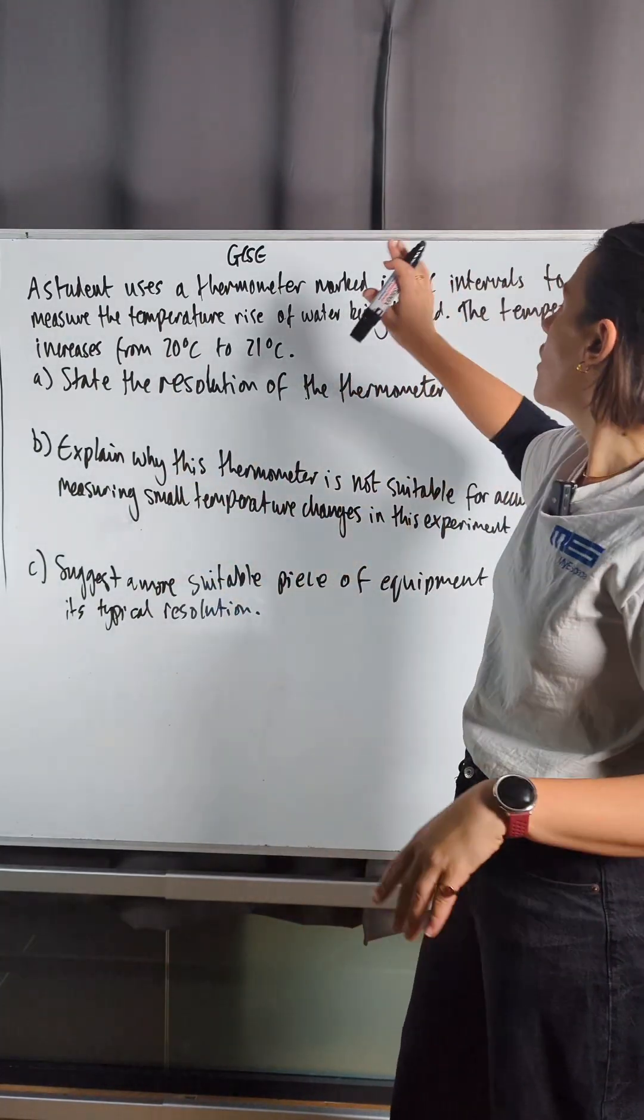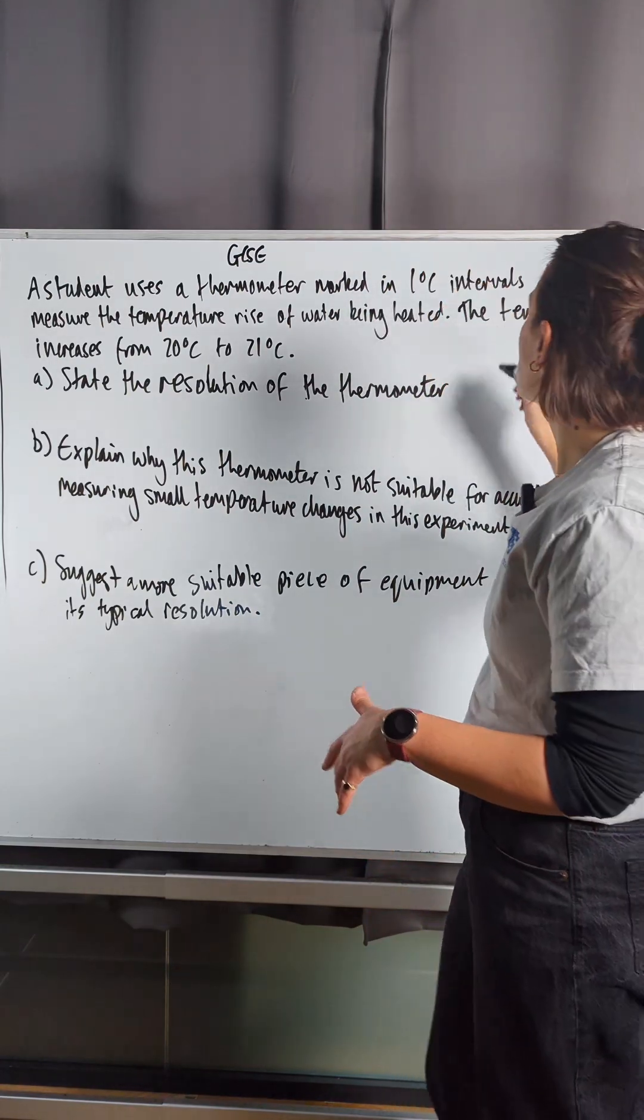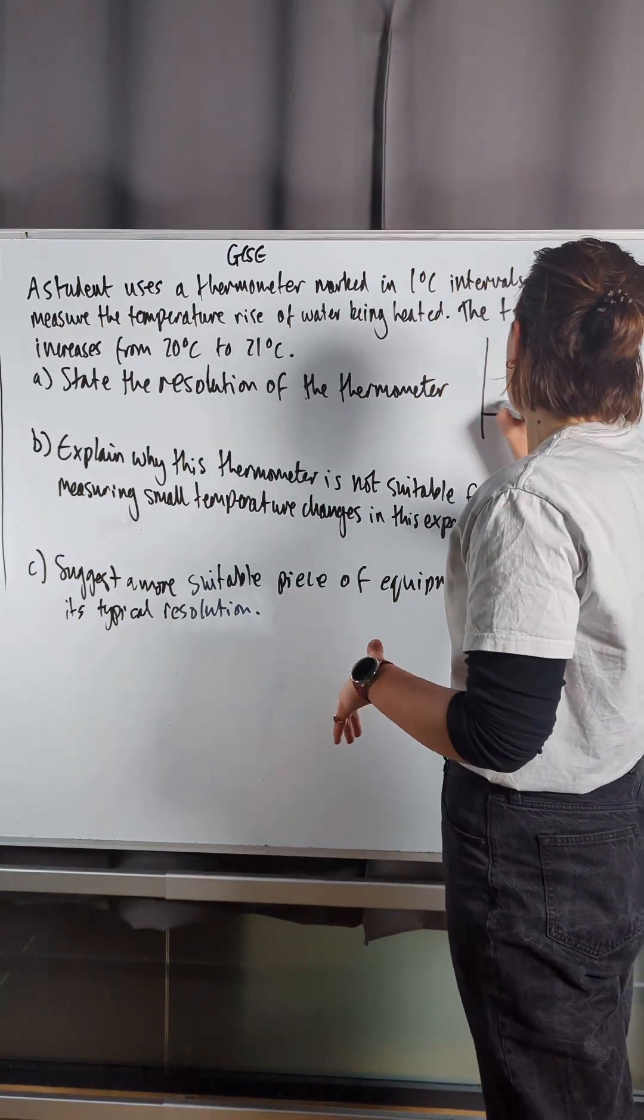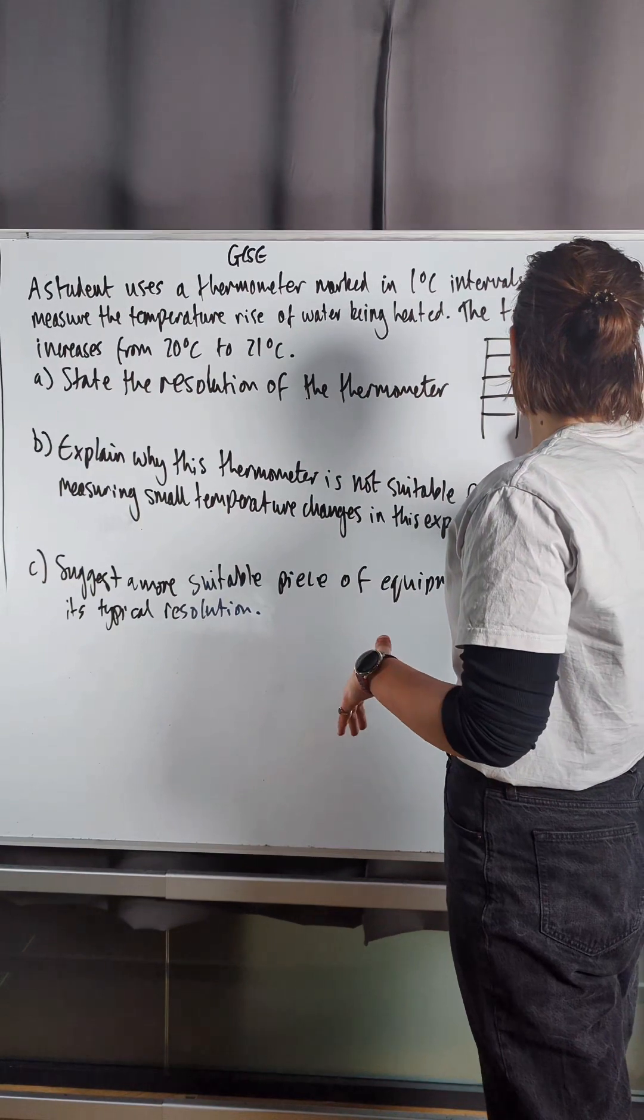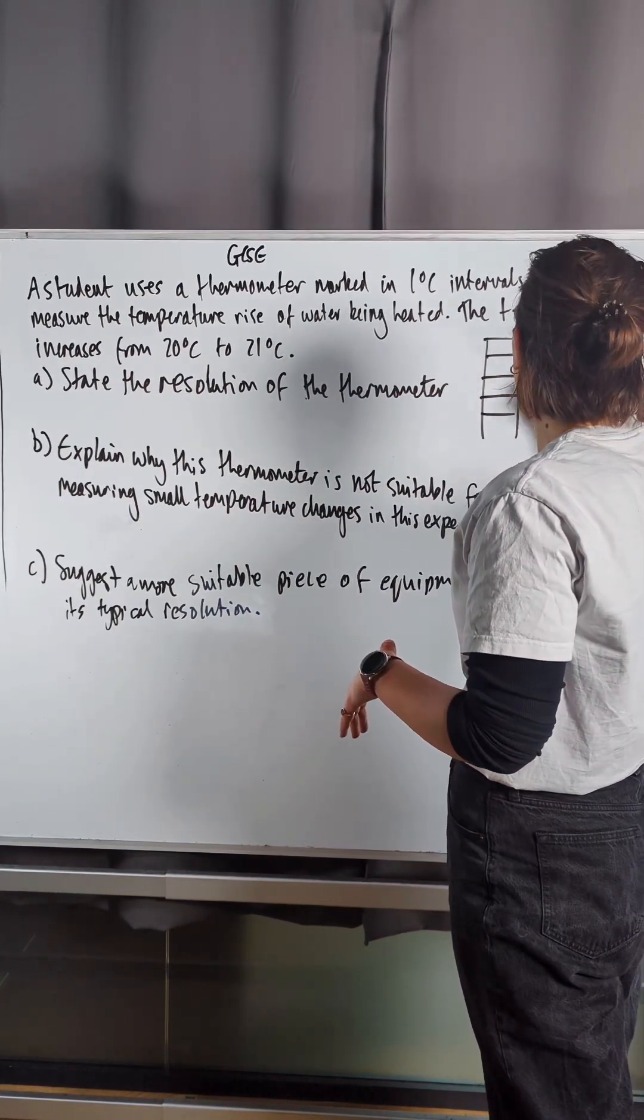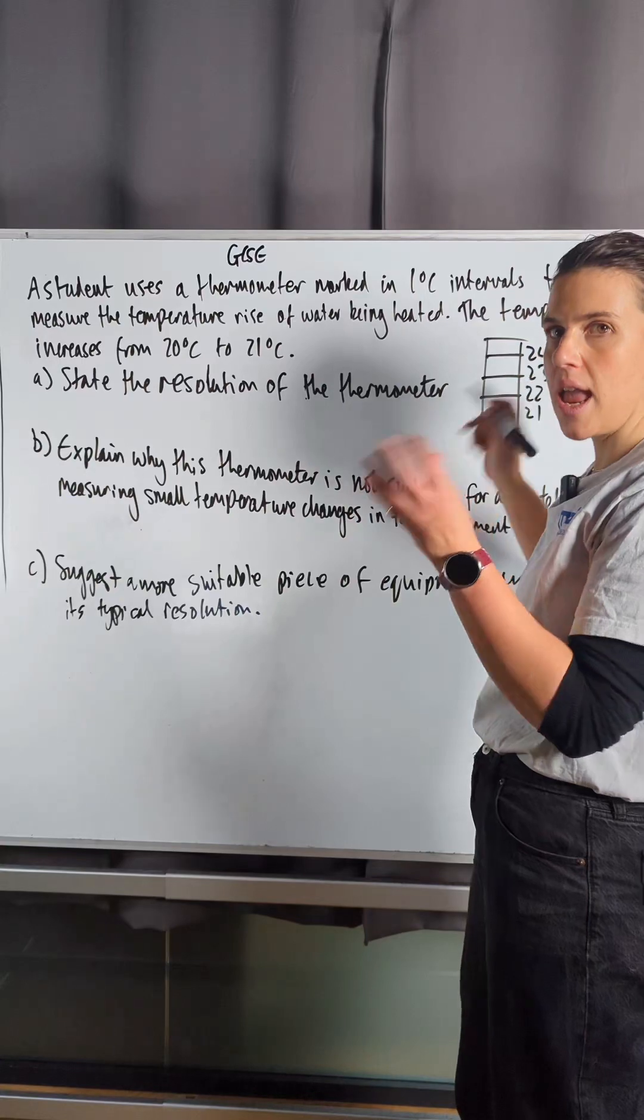We're told that this is marked in one degree C intervals, which means if we imagine this is a thermometer here, it would go up in 21, 22, 23, 24, and there's going to be nothing in the middle.